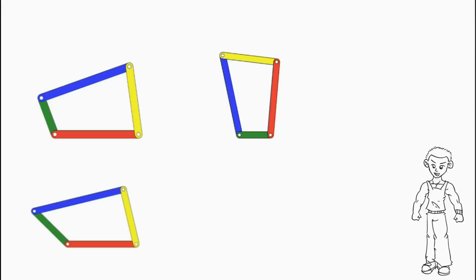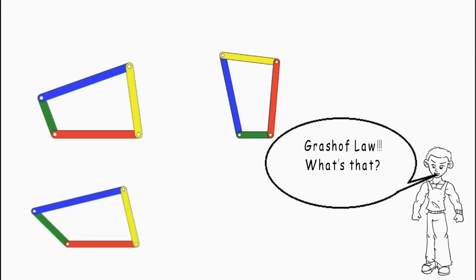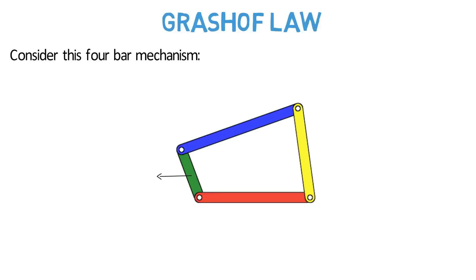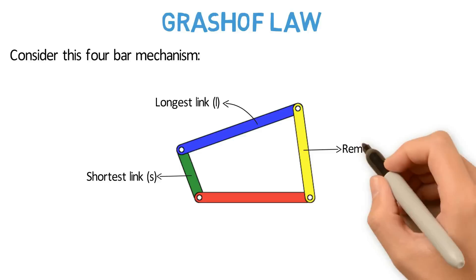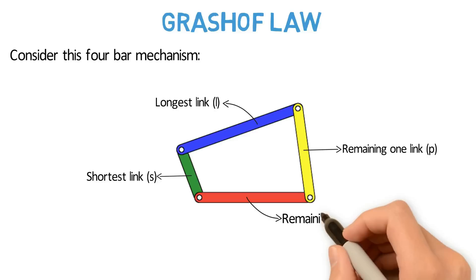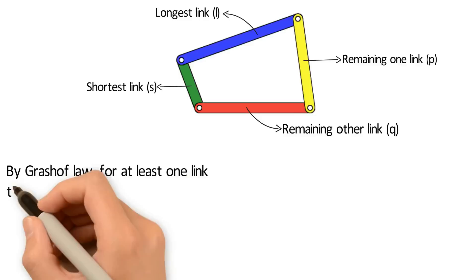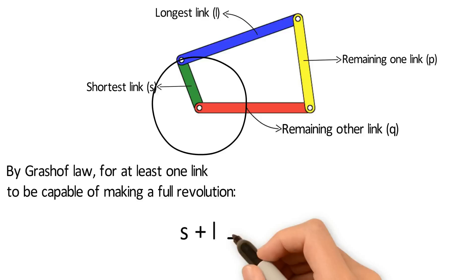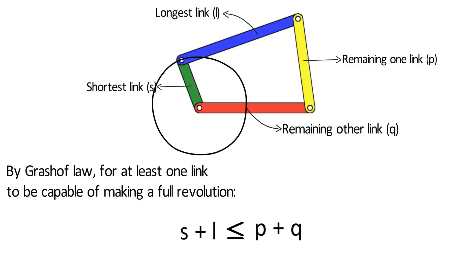Correct. Is there any relation for this? Yes, it is known as Grashof Law. Let's discuss it. Consider this four bar mechanism. Let S be the length of the shortest link, L be the length of the longest link, P be the length of one remaining link, and Q be the length of the other remaining link. By Grashof Law, for at least one link to be capable of making a full revolution, the sum of the lengths of the smallest link S and the largest link L is less than or equal to the sum of the lengths of the other two links, that is P and Q.